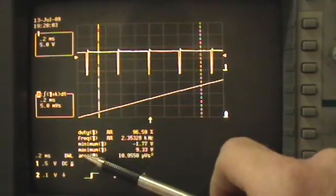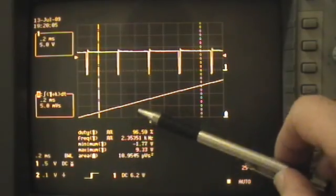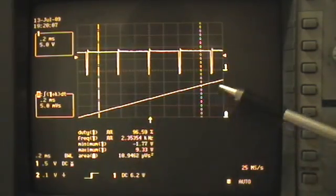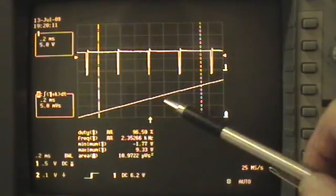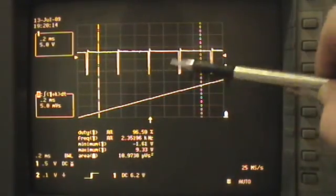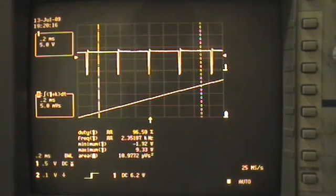So, once again, that area underneath this curve is actually a doubly integrated area under that curve. Okay. A little confusing? All right.